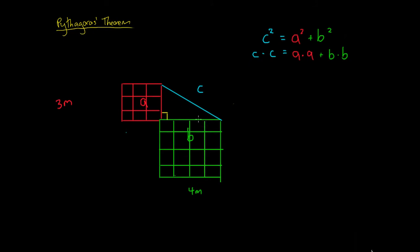So if we square these two, side A squared gives us 9, so it's just 3 times 3. And side B squared gives us 16, which is just 4 times 4. We can see there's 16 squares.